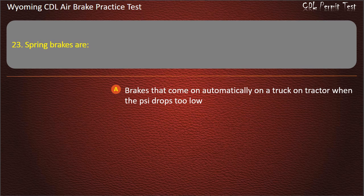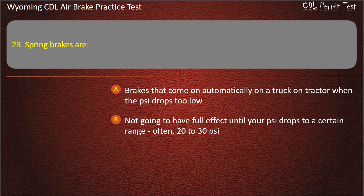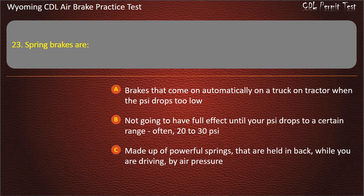Question 23. Spring brakes are: brakes that come on automatically on a truck or tractor when the air pressure drops too low; not going to have full effect until your air pressure drops to a certain range, often 20 to 30 pounds per square inch; made up of powerful springs that are held back while you are driving by air pressure; all of the above. Answer: All of the above.